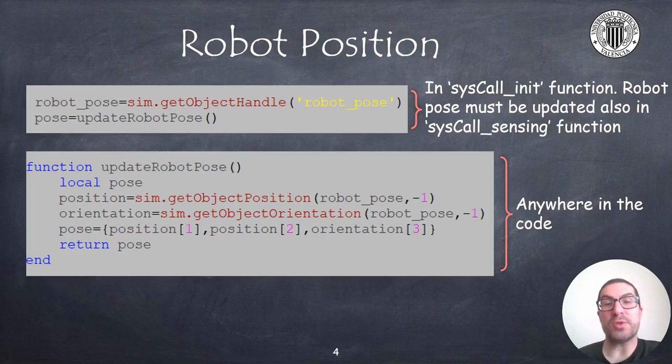And as you can see, this function returns a vector or a table with position X, Y, and the robot orientation. Later, we will need this variable in some of the functions to be used.